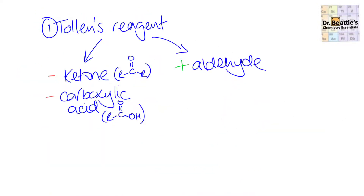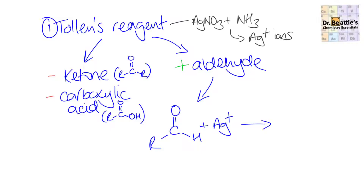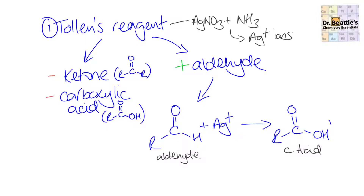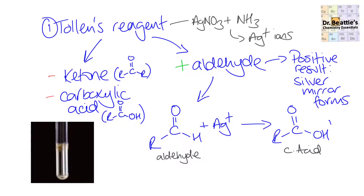The first test in more detail is Tollens reagent. This does not give any positive results with ketones or carboxylic acids, but it does give a positive result with aldehydes. Tollens reagent is a source of silver+ ions, and these silver+ ions oxidise the aldehyde to a carboxylic acid. As the aldehyde is oxidised, the silver ions themselves become reduced to silver metal, which is solid and precipitates out — and what you actually see with an aldehyde is a silver mirror. Importantly, ketones can't be oxidised and neither can carboxylic acids, so they cannot undergo this reaction.